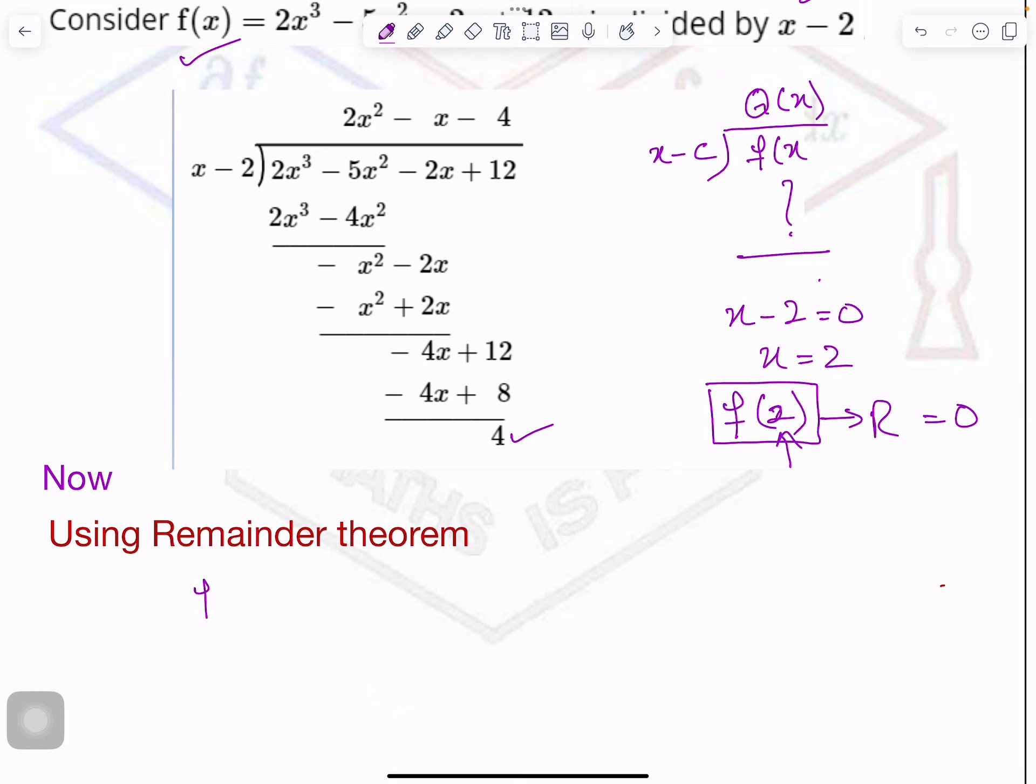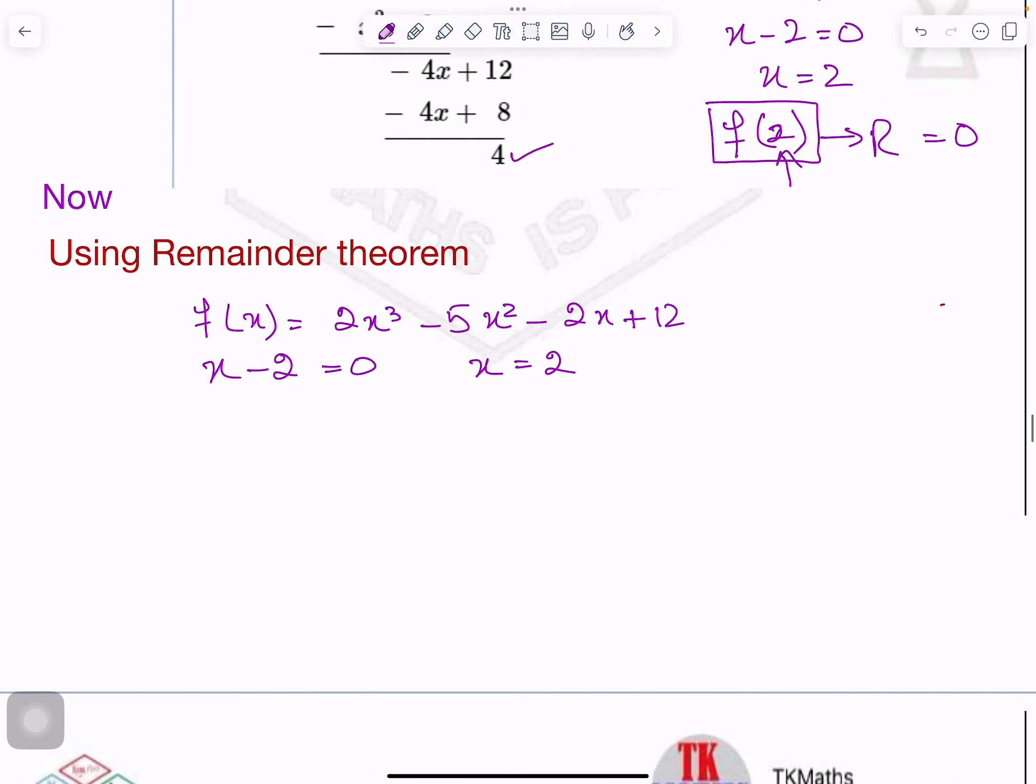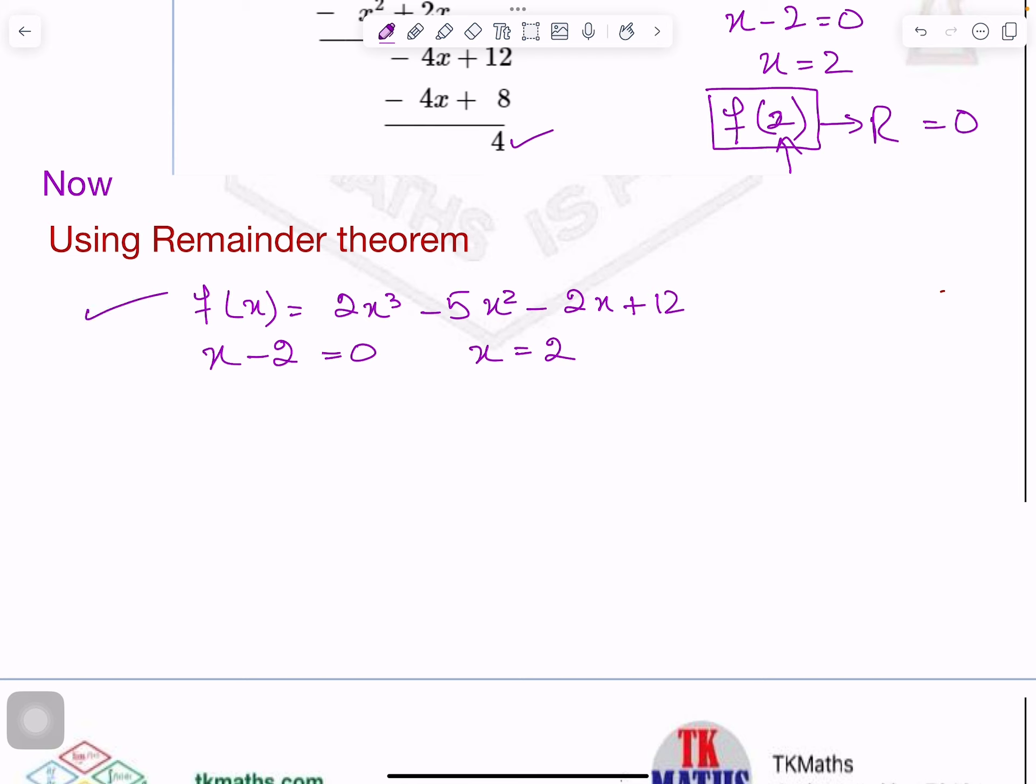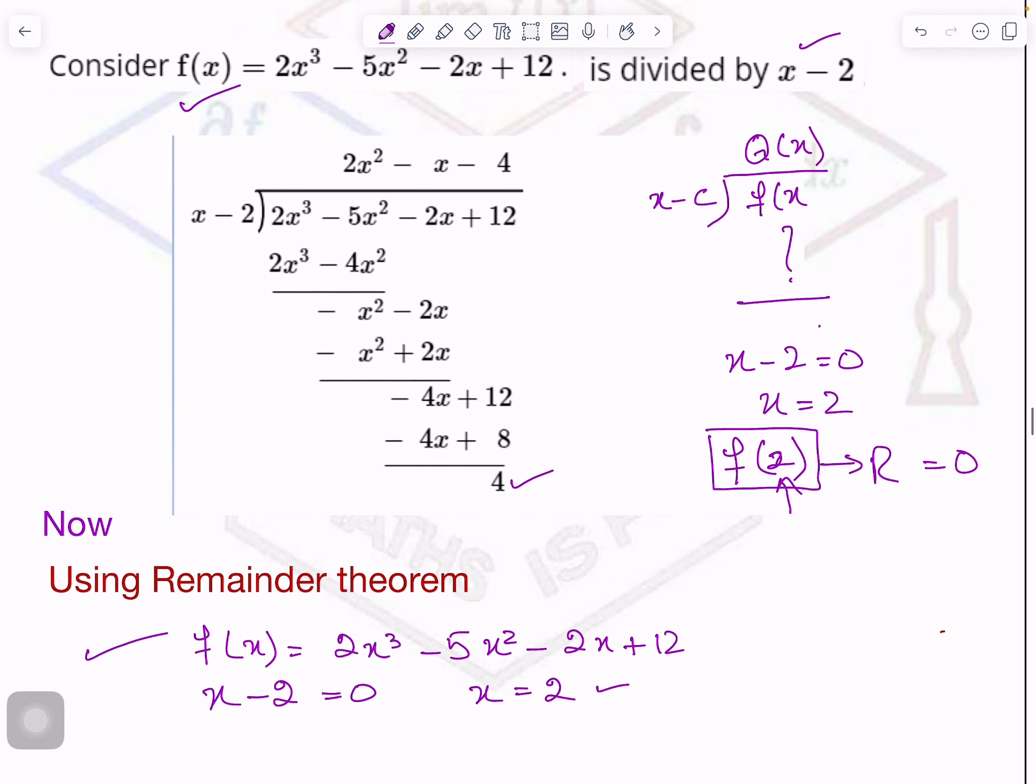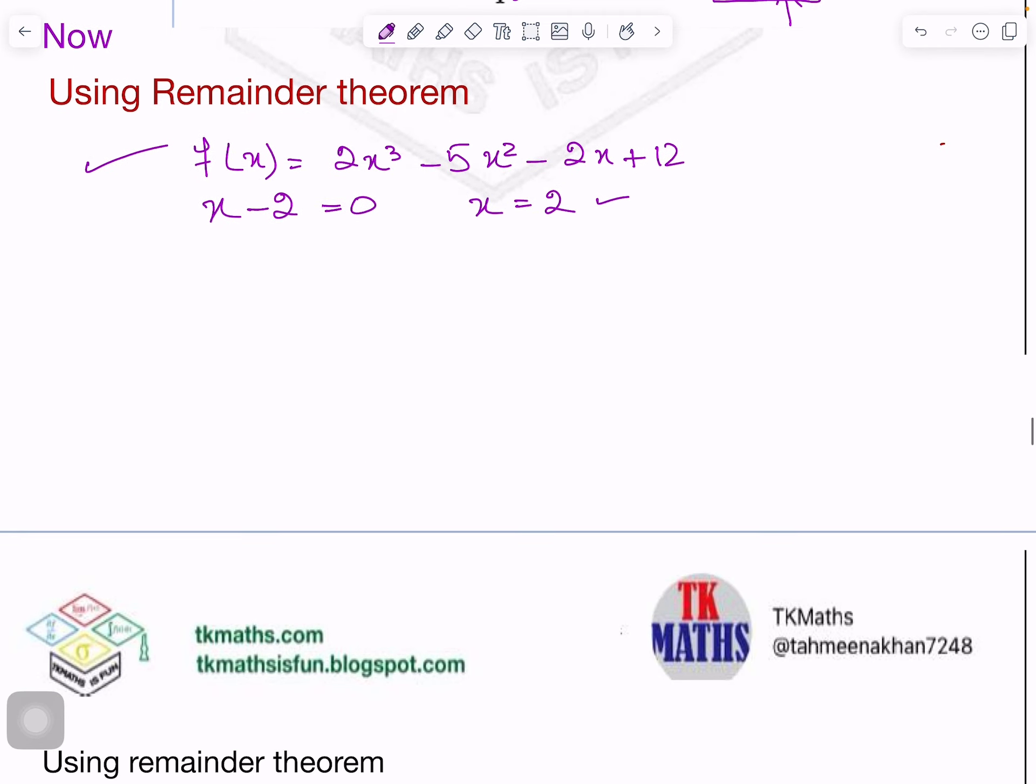Now let us see here. In this case, my polynomial is f(x) equals 2x³ minus 5x² minus 2x plus 12. And my divisor is x minus 2. From the divisor, you will take out the value of x which you will plug in the polynomial for which you have to check whether x minus 2 is a factor or not. Right now, the question is saying, find out the remainder.